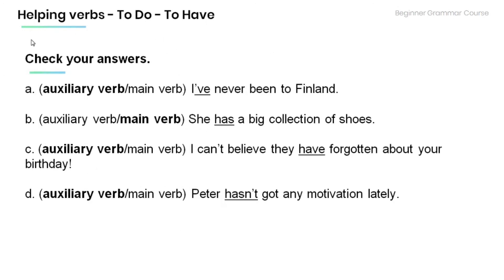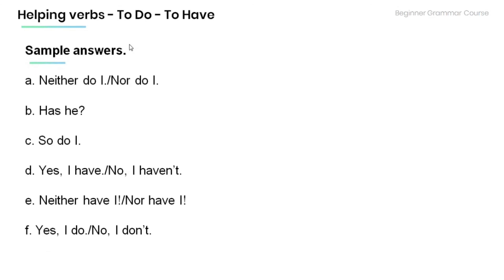Let's check your answers. 'I've never been to Finland' — auxiliary verb. 'She has a big collection of shoes' — main verb. 'I can't believe they have forgotten about your birthday' — auxiliary verb. 'Peter hasn't got any motivation lately' — auxiliary verb. Sample answers: 'Neither do I' / 'Nor do I.' 'Has he?' 'So do I.' 'Yes, I have.' 'No, I haven't.' 'Neither have I' / 'Nor have I.' 'Yes, I do.' 'No, I don't.'